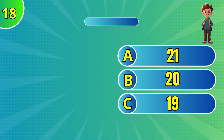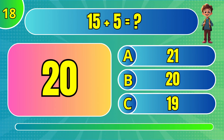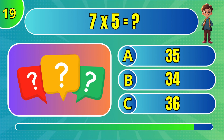What is 15 plus 5? B. 20. What is 7 times 5? A. 35.